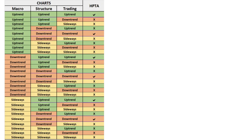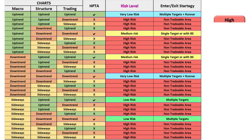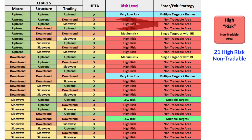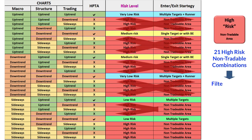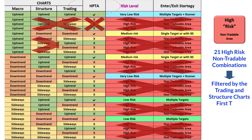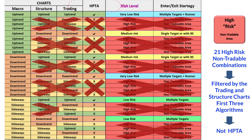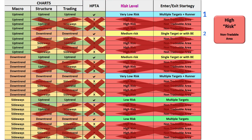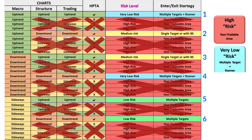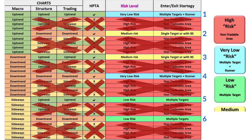From all of these, 21 combinations are high-risk and should not be traded. They will be filtered using the trading and structure charts as they do not pass the high probability trading area requirements based on the first three algorithms. The six other tradable scenarios can be categorized based on the macro structure into three risk categories: very low risk, low risk, and medium risk.